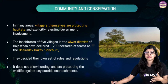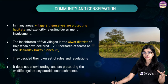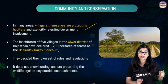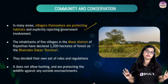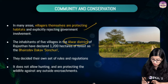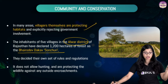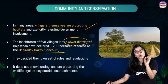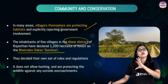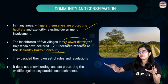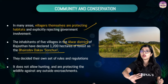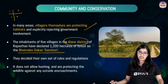Apart from the Chipko Movement, villagers in various cases have actively taken steps towards conserving forest areas. One important example is in Rajasthan's Alwar district, where villagers themselves ensured the protection of habitats and explicitly rejected the involvement of the government. About 1,200 acres of forest was declared as the Bhairo Dev Dhakav Sanctuary, with their own rules and regulations prohibiting any hunting, ensuring protection against wildlife disturbance, and preventing any encroachment into the area.